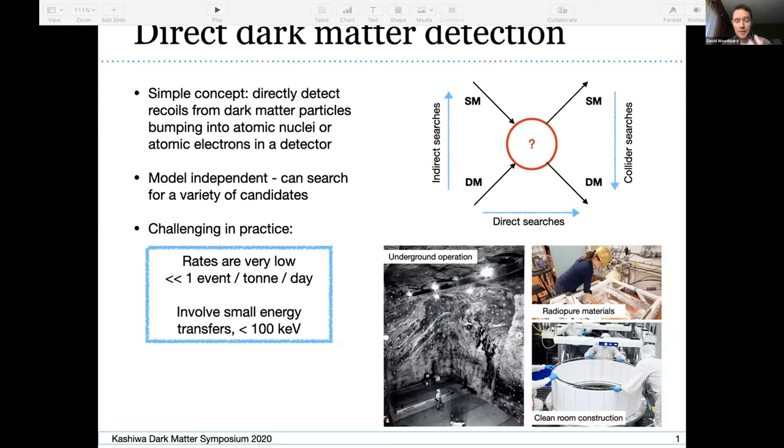So all of this means there are some generic features to these types of searches. You need to operate your detector underground. You need to build your detector from very radio pure materials so you don't just basically see all of the backgrounds from your own detector. For similar reasons, you need to construct everything inside of a clean room to reduce radon exposure and dust exposure. And for some direct searches such as LZ, which is using liquid xenon, you actually need to clean your detector medium. For xenon we're very worried about krypton, which we would see in our detector if we didn't remove it.